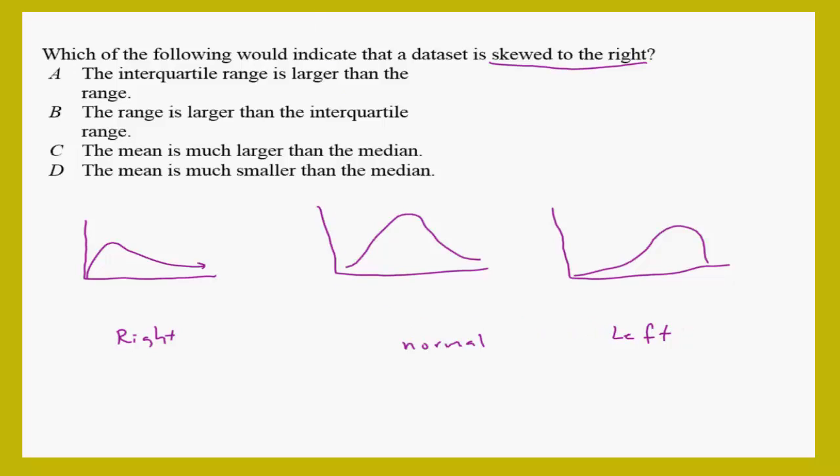In the right skewed, the difference between them is the median and the mean. The red color here is the median. This is the median, and this is the median.